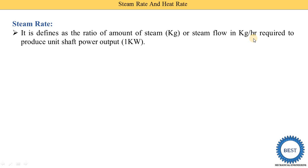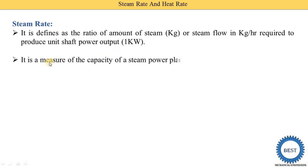We can find the steam rate using two methods. One is the amount of steam divided by unit power output — where unit power output means 1 kilowatt. The second equation is steam flow in kilogram per hours divided by unit power output, that is 1 kilowatt. Steam rate is a measure of the capacity of a steam power plant.